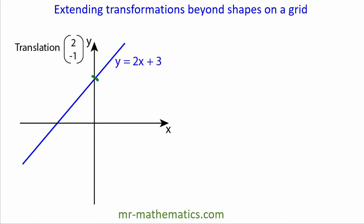Now we're going to translate the line y equals 2x plus 3. Rather than translating the whole line, we're going to translate just the intercept value, which is (0, 3).